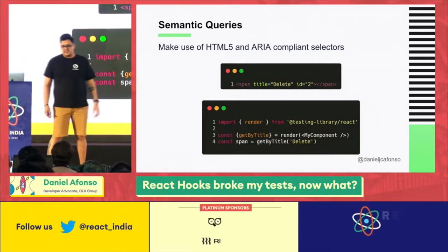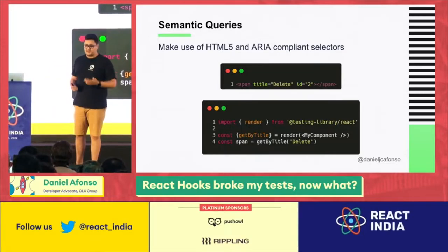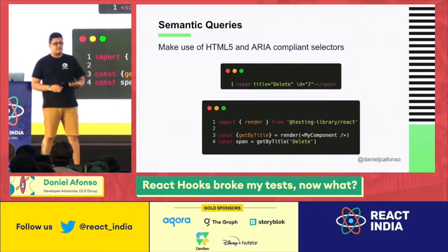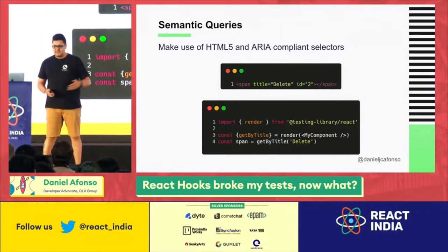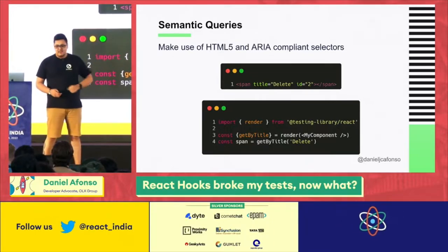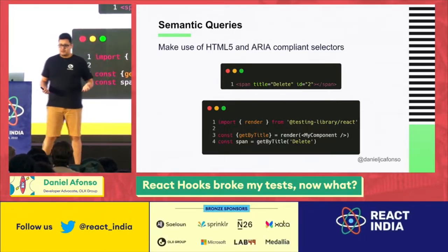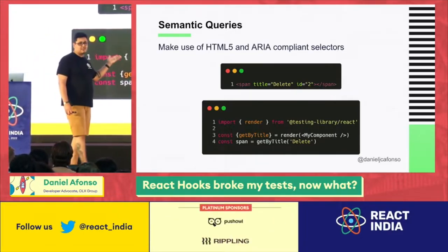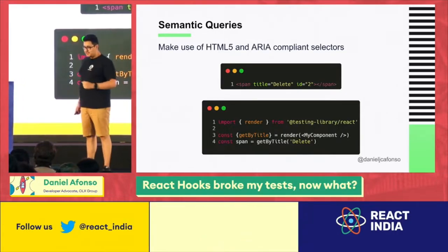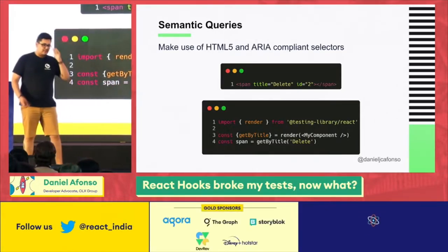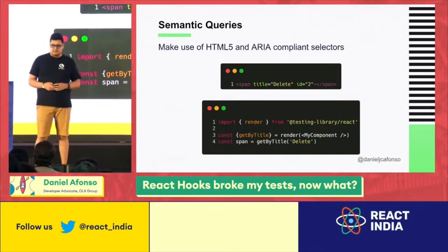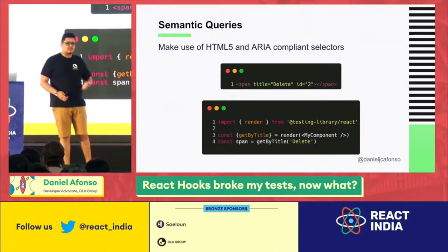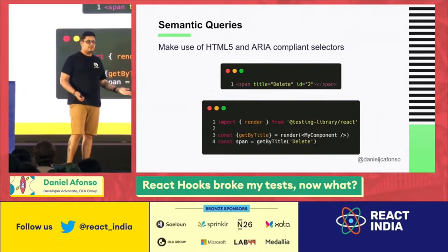For semantic queries, here's an example using the title attribute. We have a span with the title 'delete'. The process is similar — render your component, get your variant and family, in this case getByTitle, and call your query. The query will pick up the DOM attribute with the title attribute and return this span. Keep in mind that semantic queries don't fully respect accessibility patterns — the title attribute is not consistently read in screen readers, which is why you should only pick these as a second option.